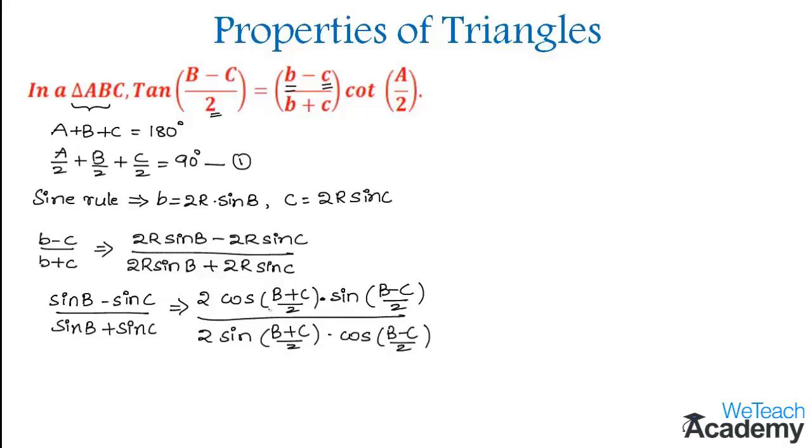Here, 2 and 2 get cancelled. We are left with cos by sine, which is cot. So we get cot B plus C divided by 2 times sine by cos, which is tan. Here we get tan B minus C divided by 2.